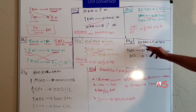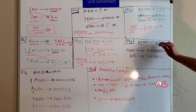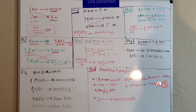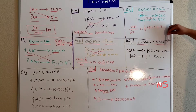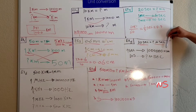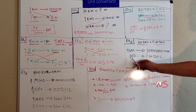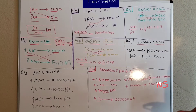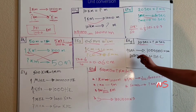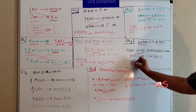Example number five: we have thirty seconds and we need to convert it to microseconds. We know that one second equals one million microseconds. We need to find how many microseconds are in thirty seconds, so we multiply thirty by one million and divide by one.